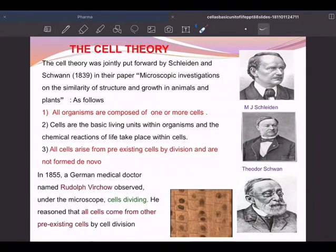If a cell is to be formed, there must be another pre-existing cell. From pre-existing cells, new cells will be formed. Cell theory states that bodies of all organisms are made up of cells and their products, so that cells are units of both structure and function.